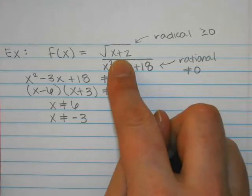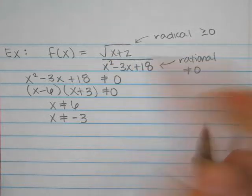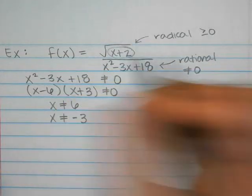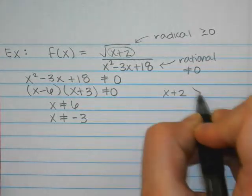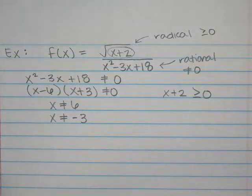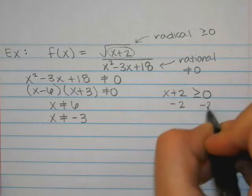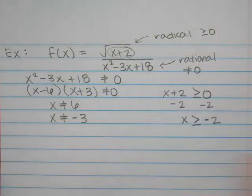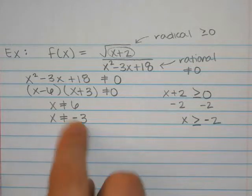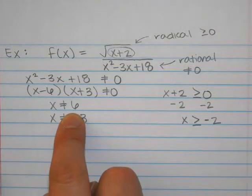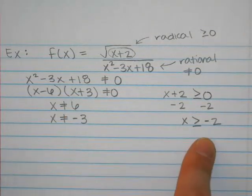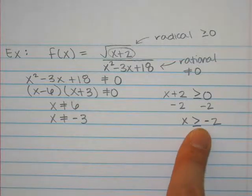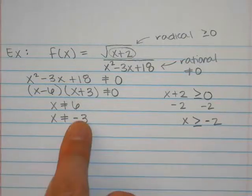Then we have to deal with the radical. So the stuff underneath the radical can't be negative, but zero is okay. So x plus 2 has to be greater than or equal to zero. Subtract the 2, so x is greater than or equal to negative 2. But we have to skip negative 3 and we have to skip positive 6. So we have two different sets of limitations we have to satisfy all at the same time. All the numbers bigger than or equal to negative 2, but skip negative 3 and skip 6.